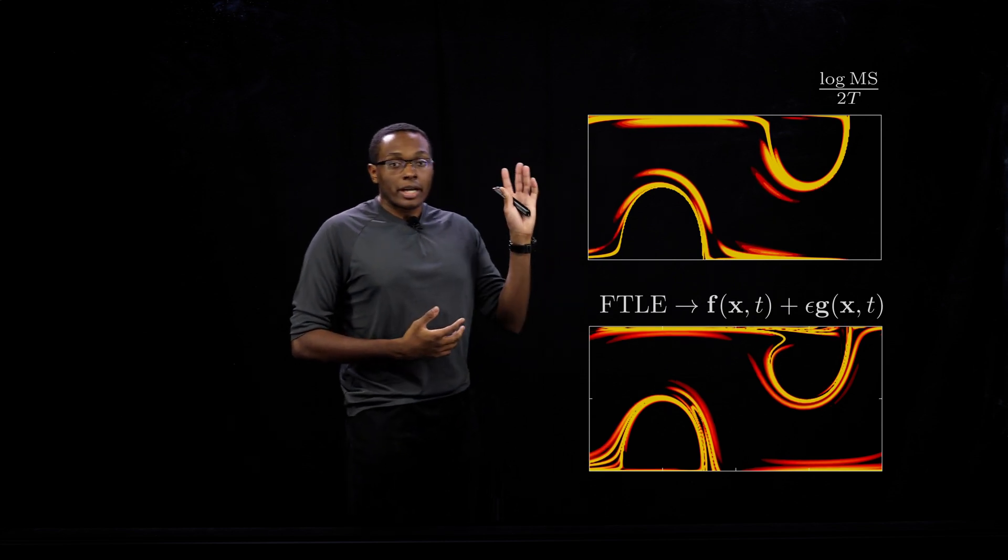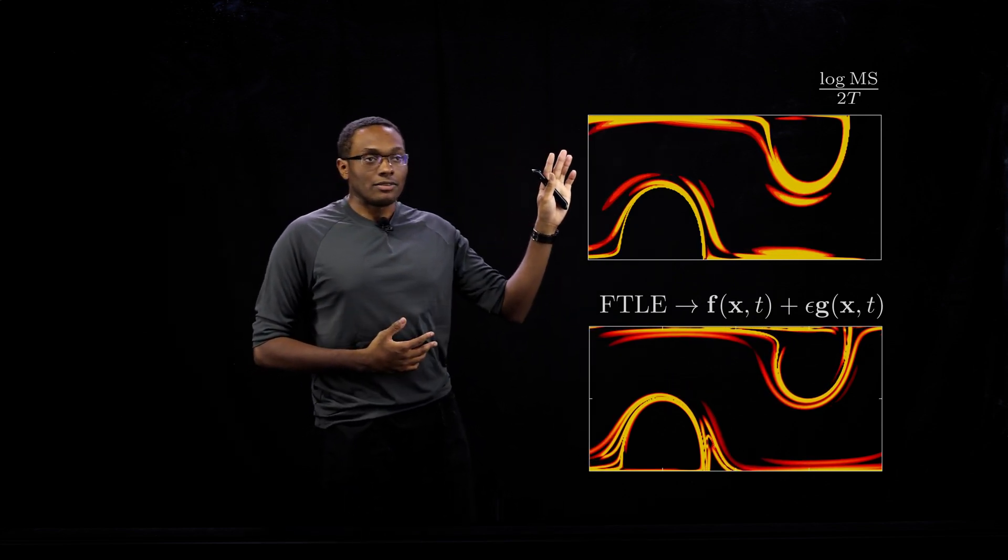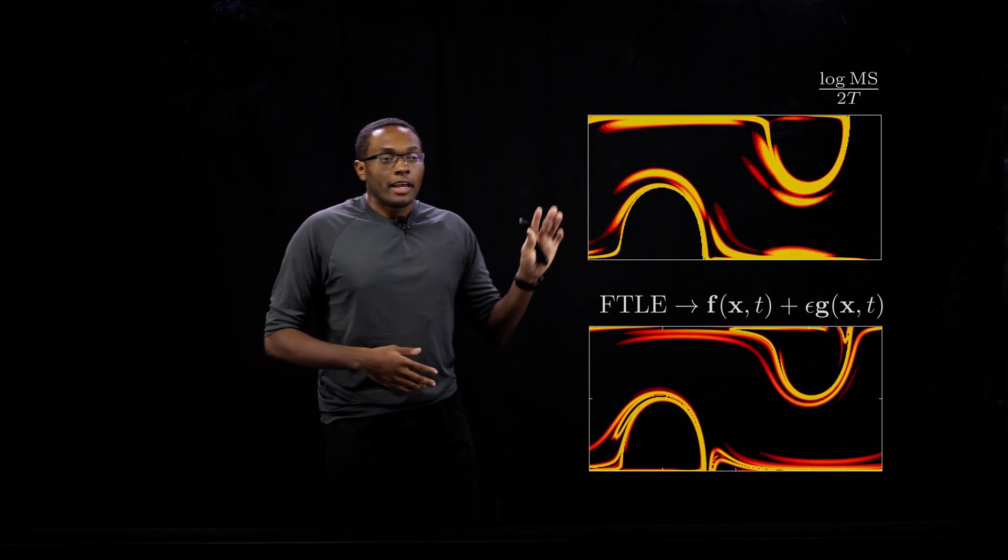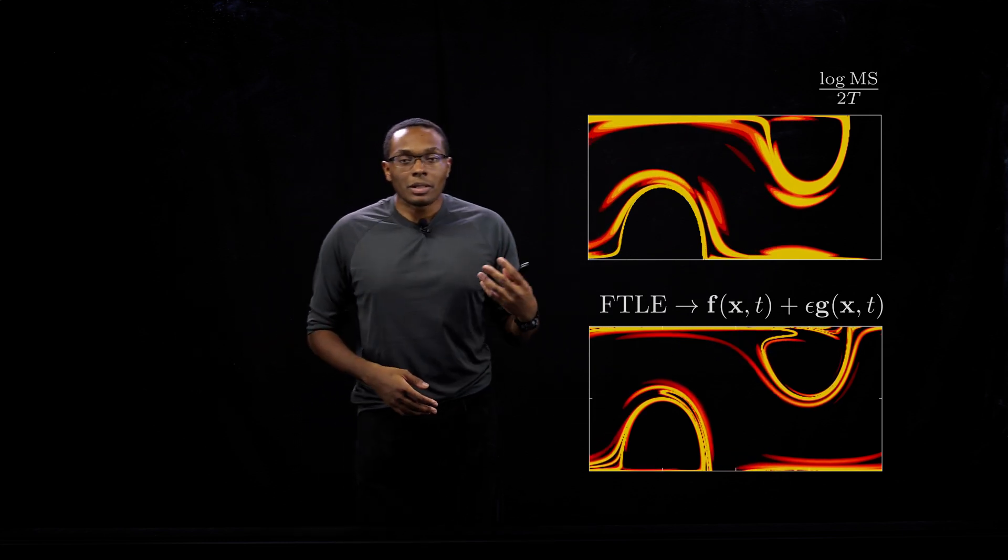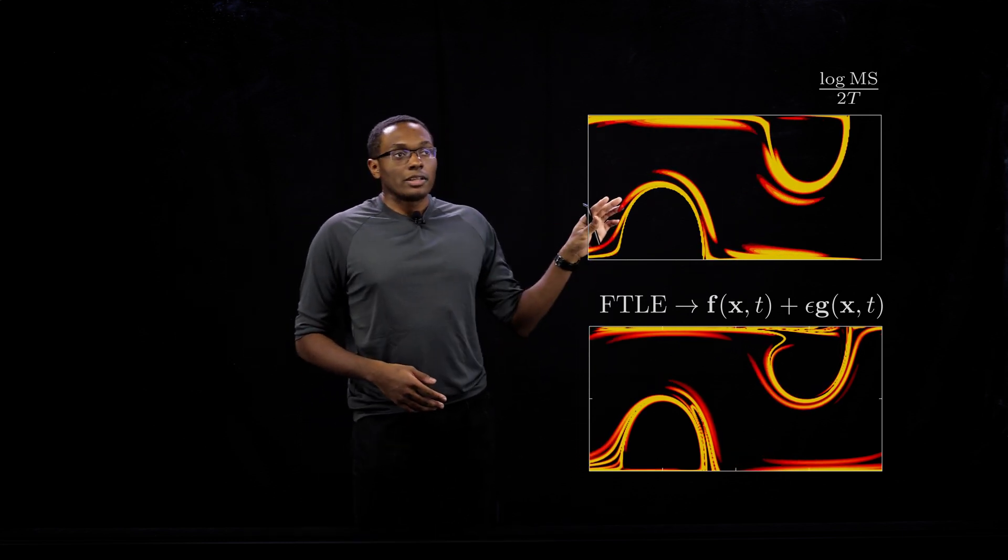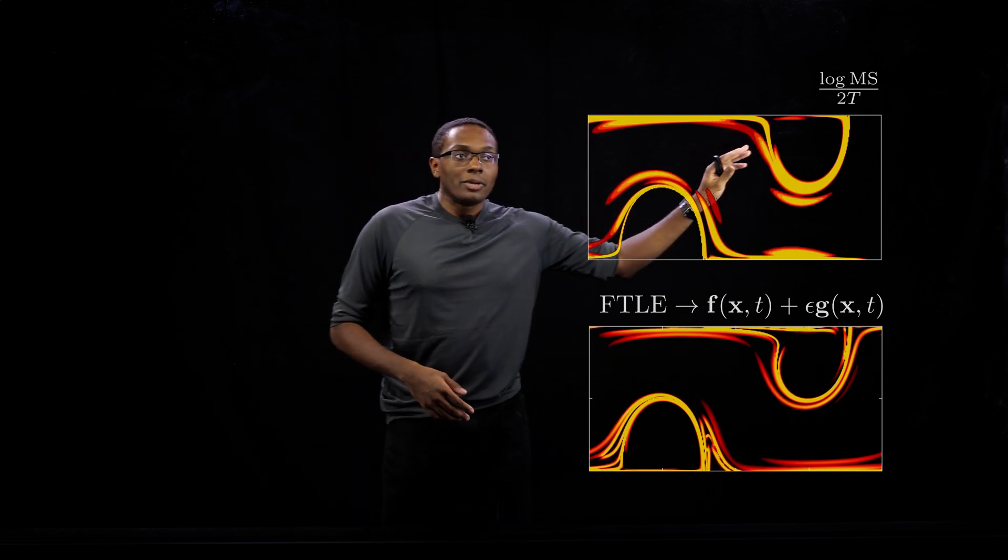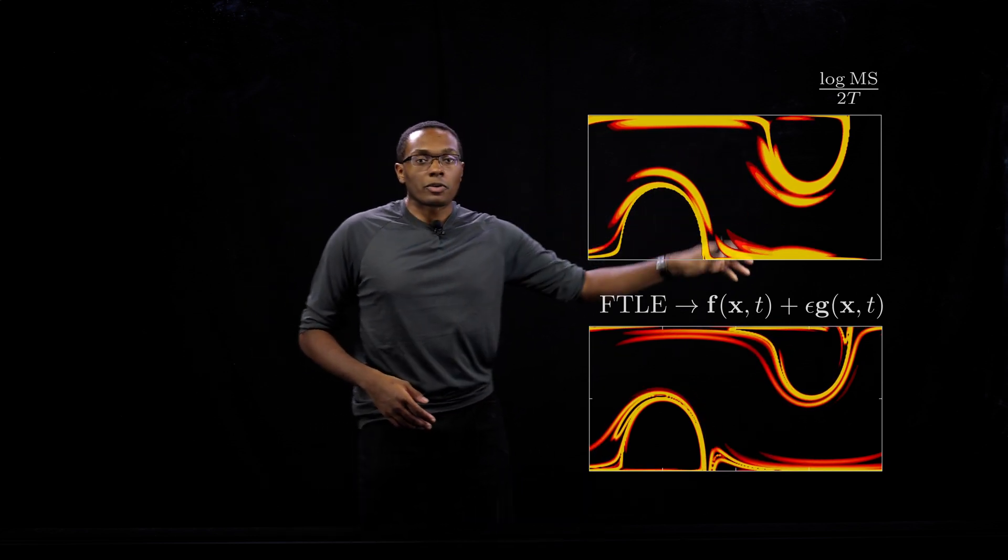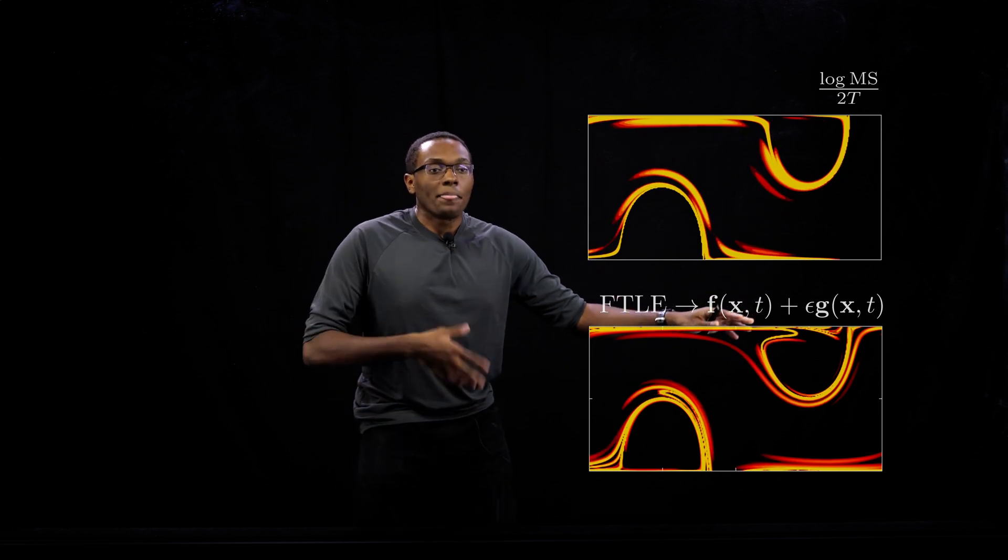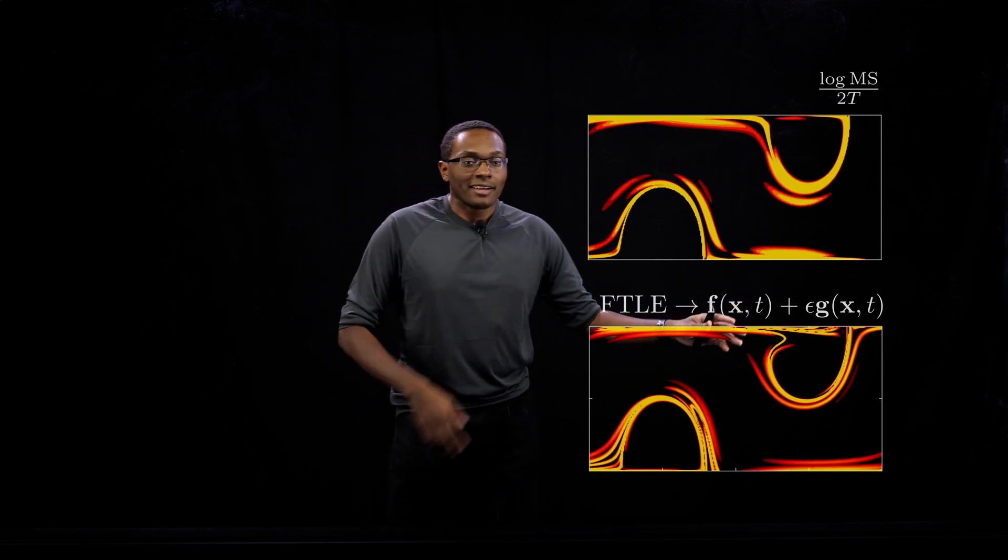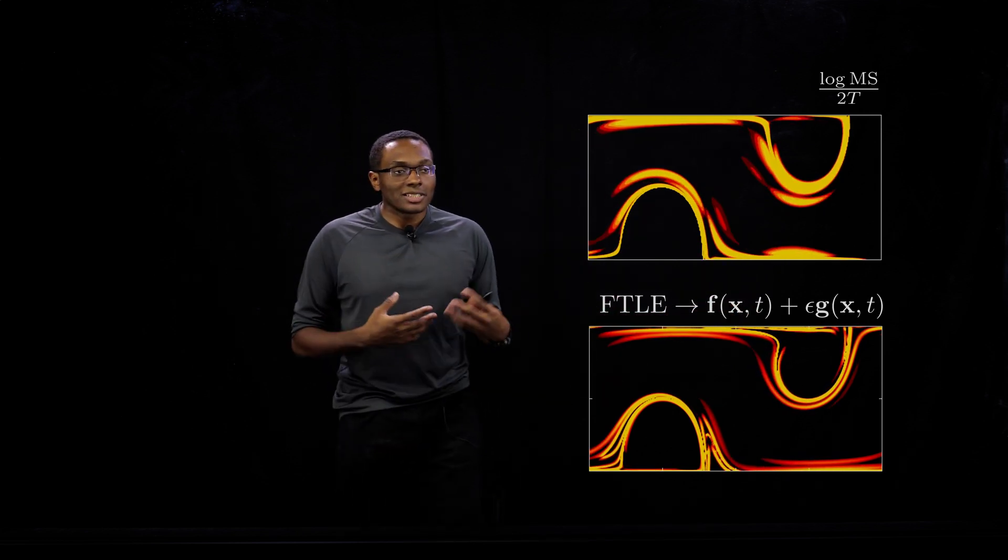If we compare the two fields, the mode sensitivity here is at the top and the FTLE field is at the bottom. We can see some similarities in lobe dynamics, which is really good, and some additional movement here at the top right, which may correspond to the actual deformation of the right-most side.